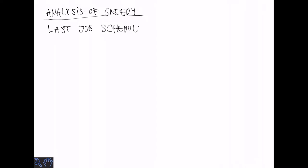Let's consider the analysis of the greedy algorithm. Consider the last job scheduled. Let's say job j. It stops at time cj. So when does it start? Well obviously at time cj minus the processing time pj.